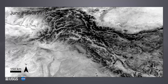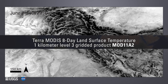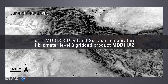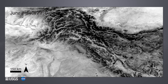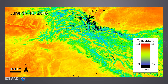Here is a land surface temperature image centered over the border of Tajikistan, Afghanistan, Pakistan, India, and China from June 9th to 16th, 2016, shown using the Terra MODIS eight-day land surface temperature 1-kilometer level 3 gridded product MOD11A2. The daytime LST is available as a single science dataset.